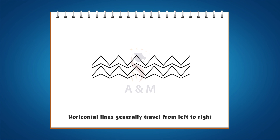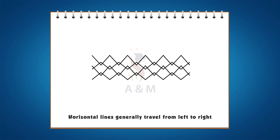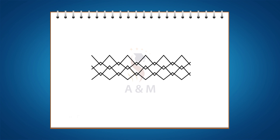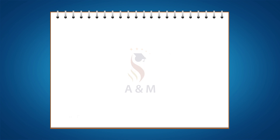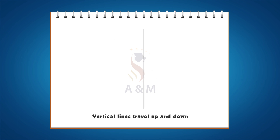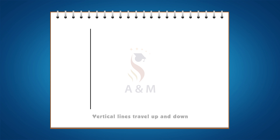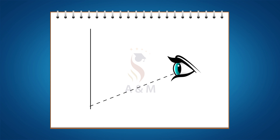In art, horizontal lines often establish a feeling of rest as well as develop a ground in space. Next, vertical. Vertical lines travel up and down. They are perpendicular to horizontal lines. They often emphasize height, and in art, lead the eye from bottom to top and vice versa.